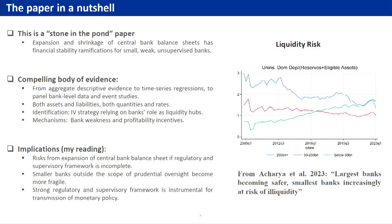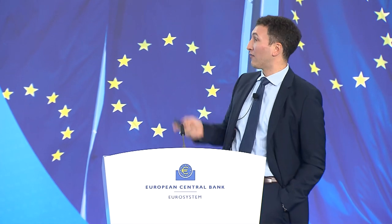Viral and co-authors bring a compelling body of evidence — from aggregate descriptive statistics to time series regressions, panel bank-level data, and event studies, looking at assets, liabilities, quantities, and rates. They refine the causal interpretation using an identification strategy relying on banks' role as liquidity hubs, and illustrate the mechanism clearly: banks that are weaker and lowly capitalized tend to reach for yield and have all the profitability incentives stacked up to build this additional liquidity risk. My personal reading is that the risks from central bank balance sheet expansion are there if regulatory and supervisory frameworks are incomplete — particularly if they don't cover smaller, weaker banks outside the scope of oversight. The bottom line is that a strong regulatory and supervisory framework is instrumental for the smooth transmission of monetary policy.